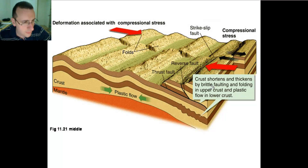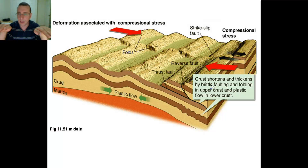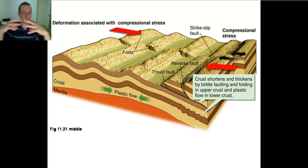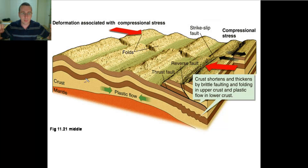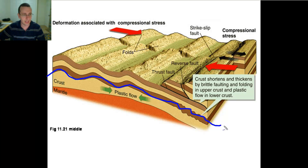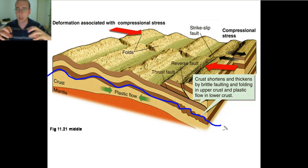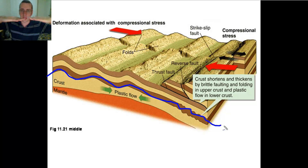In convergent boundaries, you have the opposite happening. Instead of the crust ripping, the crust is folding. The crust underneath, where plastic flow occurs and rock is more likely to fold, gets shortened and thickened by actually folding the bottom. You see those synclines and anticlines we talked about actually happening because the bottom is folding, while the top, which is more brittle, will tend to crack.